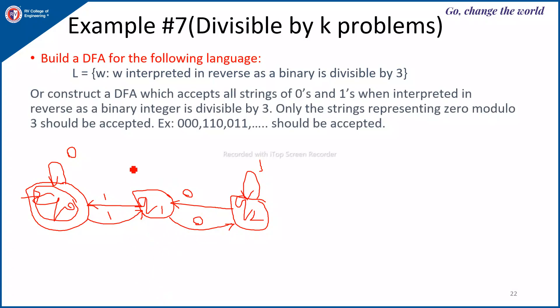To verify: 000 is accepted; 110 is accepted; 011 should be accepted. You can check all remaining strings that are multiples of 3 in reverse binary — they will be accepted by this DFA.